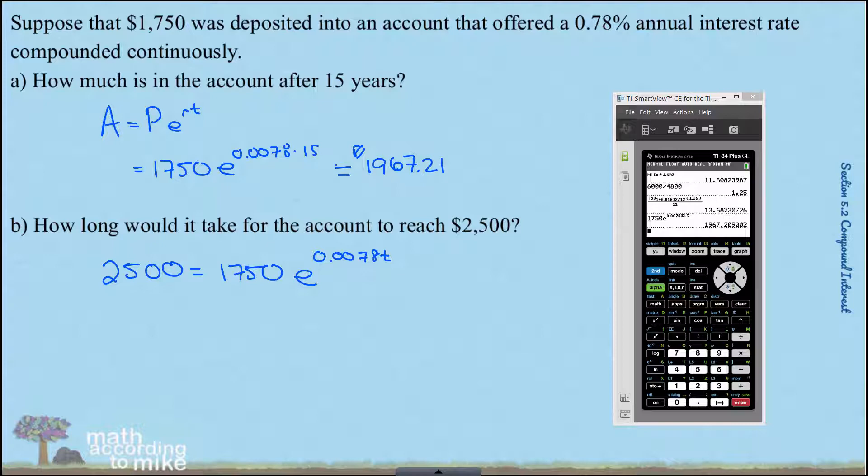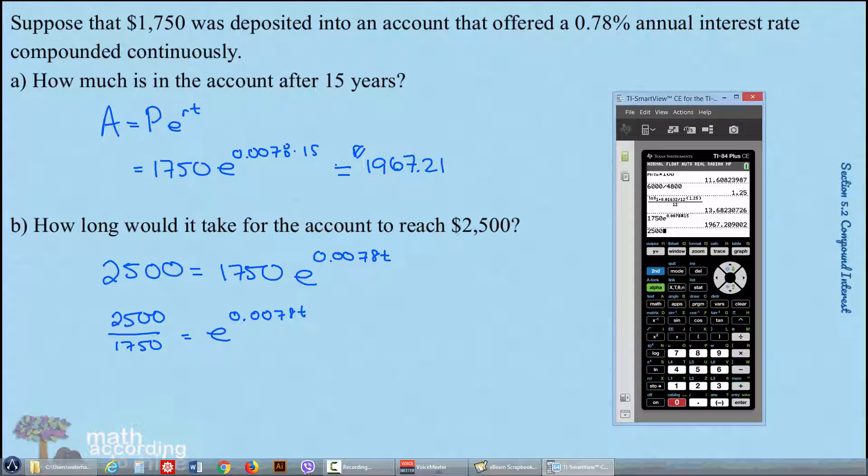So once again, this is an exponential equation. It's not one to one because we don't have E on both sides as a base. So we have to get rid of that $1,750 by dividing both sides. Because remember, your coefficient of the exponential term has to be a one. And let's check to see if this is an ugly decimal.